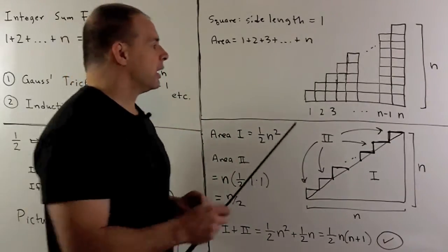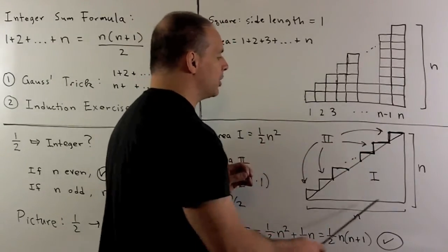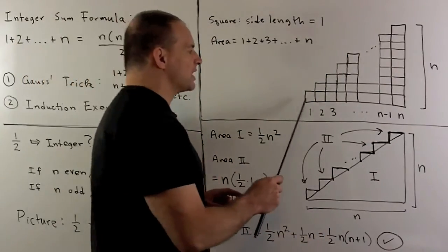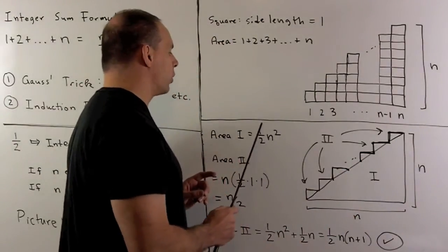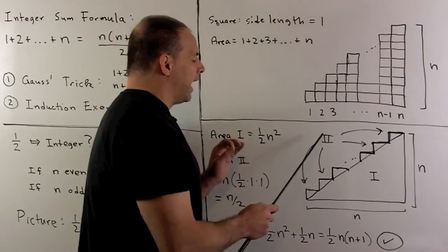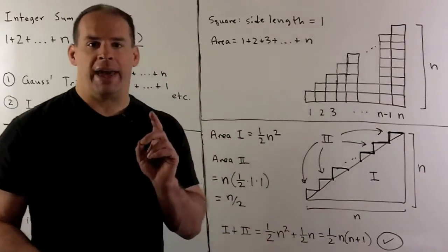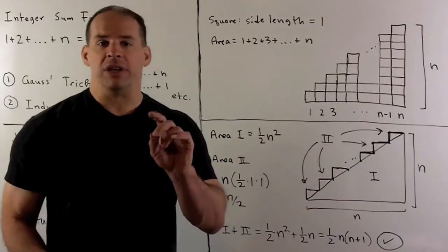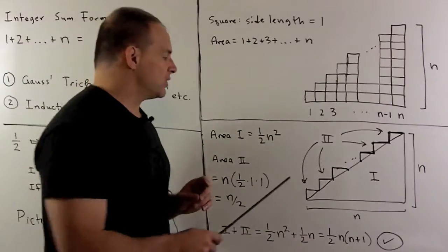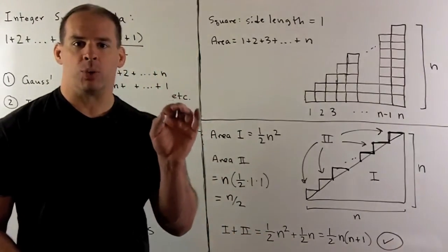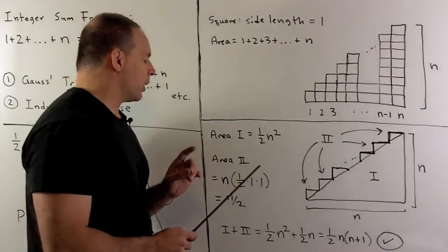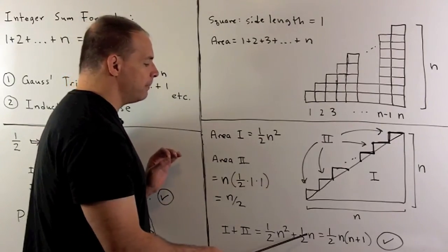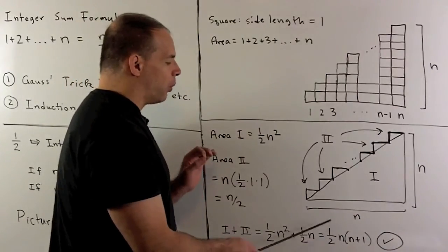Now, I can put in this diagonal to make this into one big triangle with a lot of little triangles. The area of the big triangle: its side lengths equal n, so we get 1 half n times n, or 1 half n squared. For all the little triangles — there's one in each column, so we have n of them. Each has area 1 half base times height, which is 1 half times 1 times 1. So their total contribution is n over 2. Adding these together: 1 half n squared plus 1 half n. Factoring out n, we get 1 half n times n plus 1, which verifies our original formula.